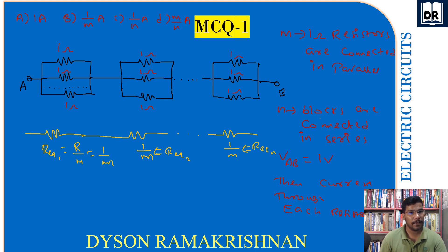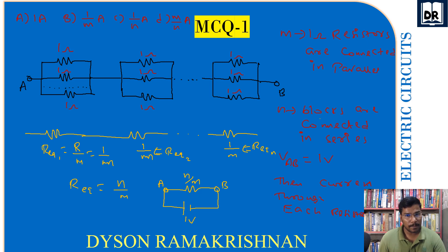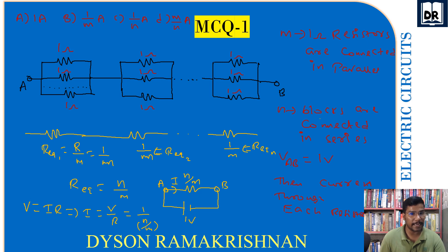Since n such blocks are connected in series, we add them: final R_eq = n/m ohm. Given voltage between A and B is 1 volt, we use V = IR, so I = V/R = 1 ÷ (n/m) = m/n ampere. Therefore option (d) m/n ampere is correct.